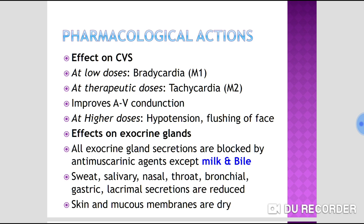Regarding effects on exocrine glands: all exocrine gland secretions are blocked by anti-muscarinic agents except milk and bile. Secretions such as sweat, salivary, nasal, throat, bronchial, gastric, and lacrimal secretions are reduced. As a result, skin and mucous membranes become dry.